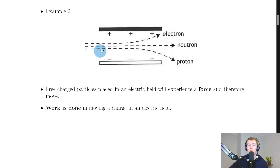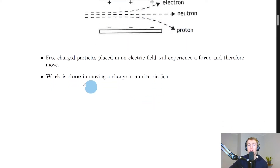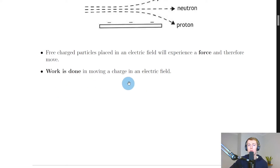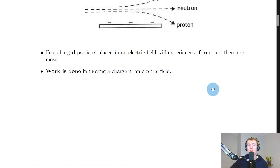For a proton, because it's positively charged, it will be repelled away from the positively charged plate on top and attracted towards the negatively charged plate on the bottom — that's why the proton curves downward. Charged particles placed in an electric field will experience a force and therefore move; this force causes the deflection. We also say that work is done in moving a charge in an electric field — work done is a type of energy, and energy is required to move the charge.